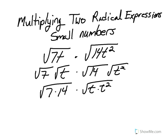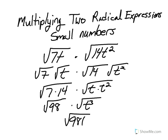Then we multiply this out: 7 times 14 gives us the square root of 98 times the square root of t cubed. And finally we get the square root of 98t cubed. But we're not done — this now has to be simplified.